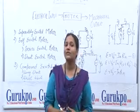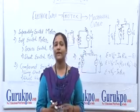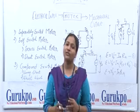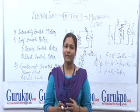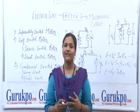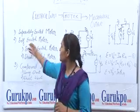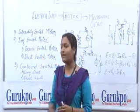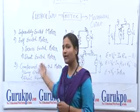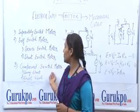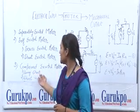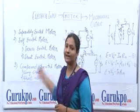Friends, basically, a motor is divided into three categories: separately excited motor, self-excited motor, and compound excited motor. Self-excited motor is again divided into two sub-categories: series excited motor and shunt excited motor. Compound excited motor is again divided into two sub-categories: long shunt excited and short shunt excited.